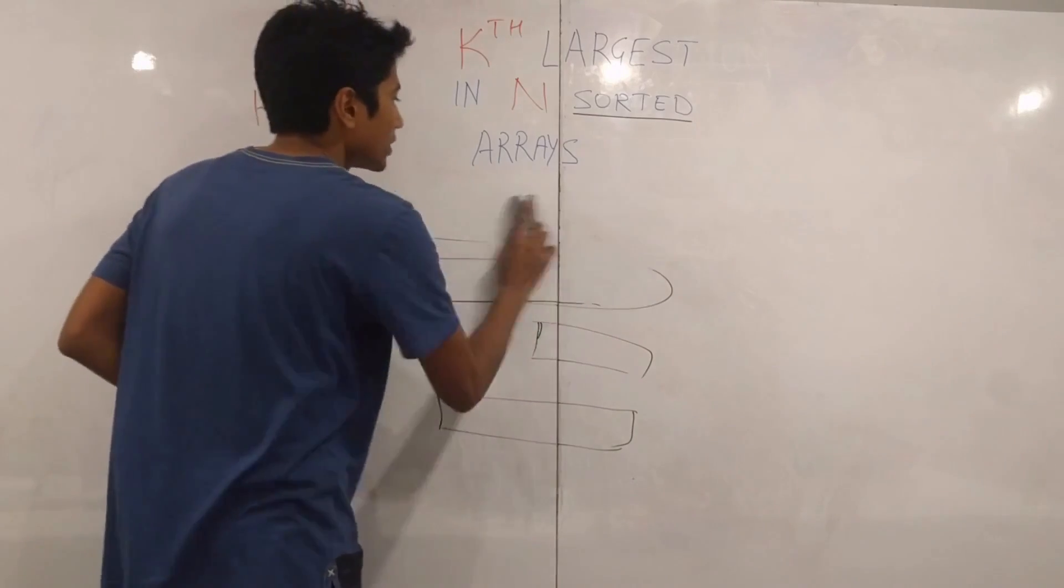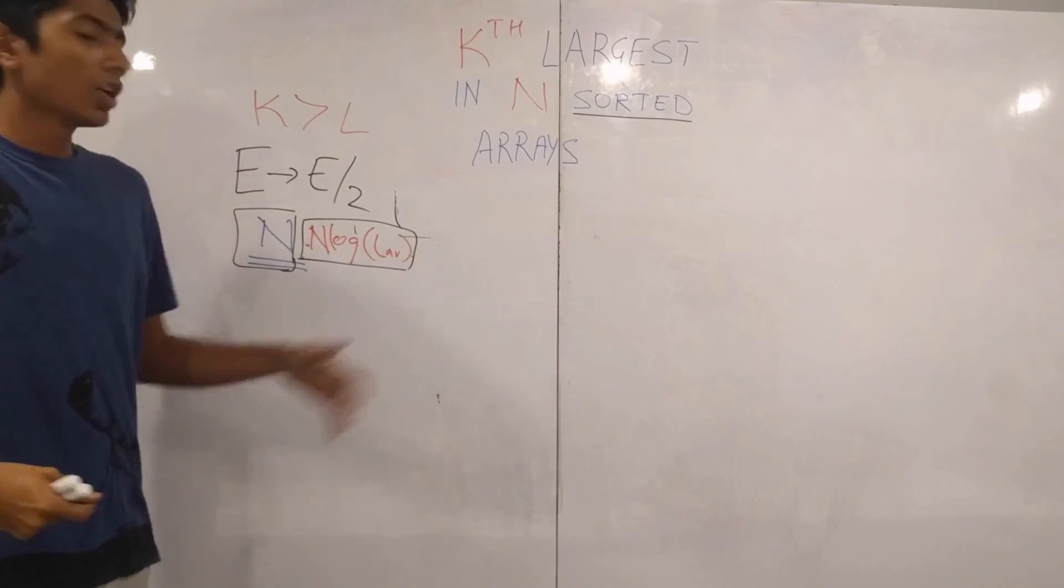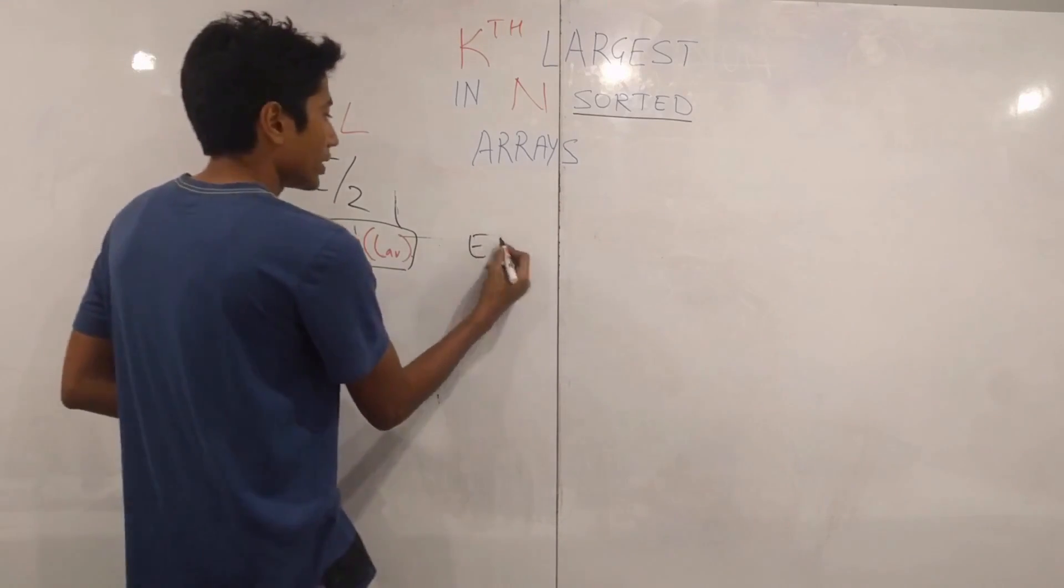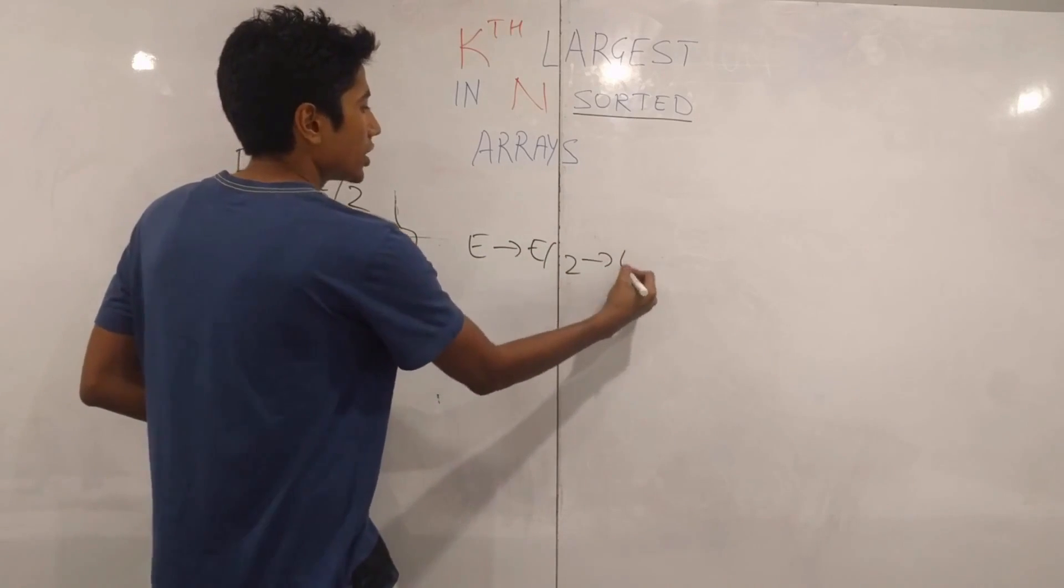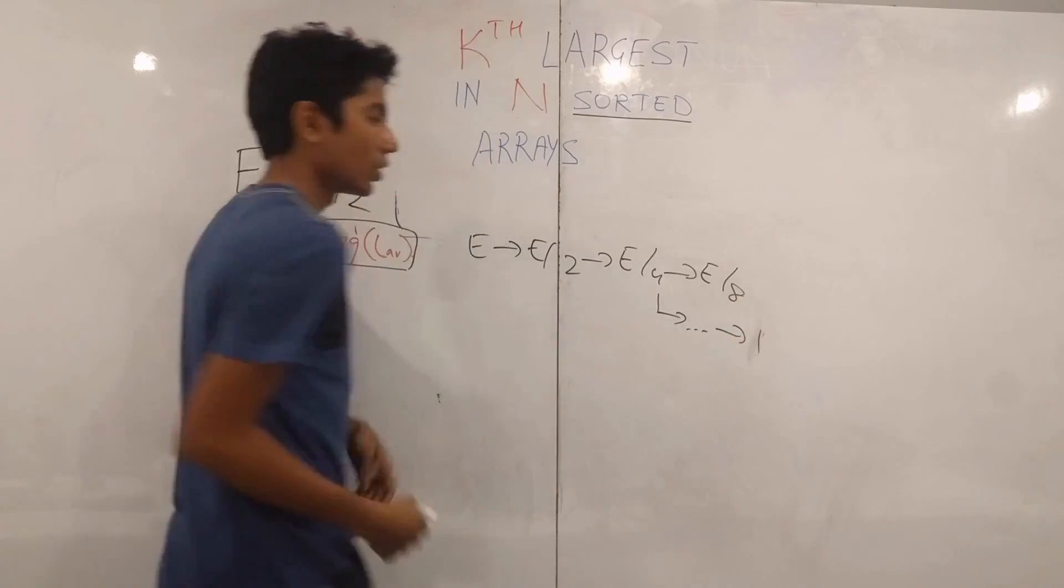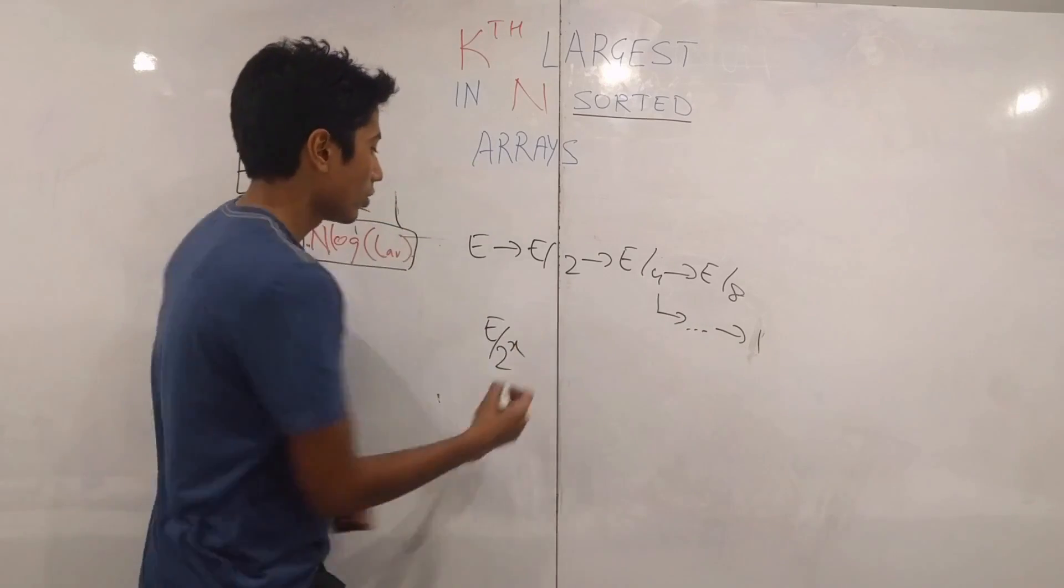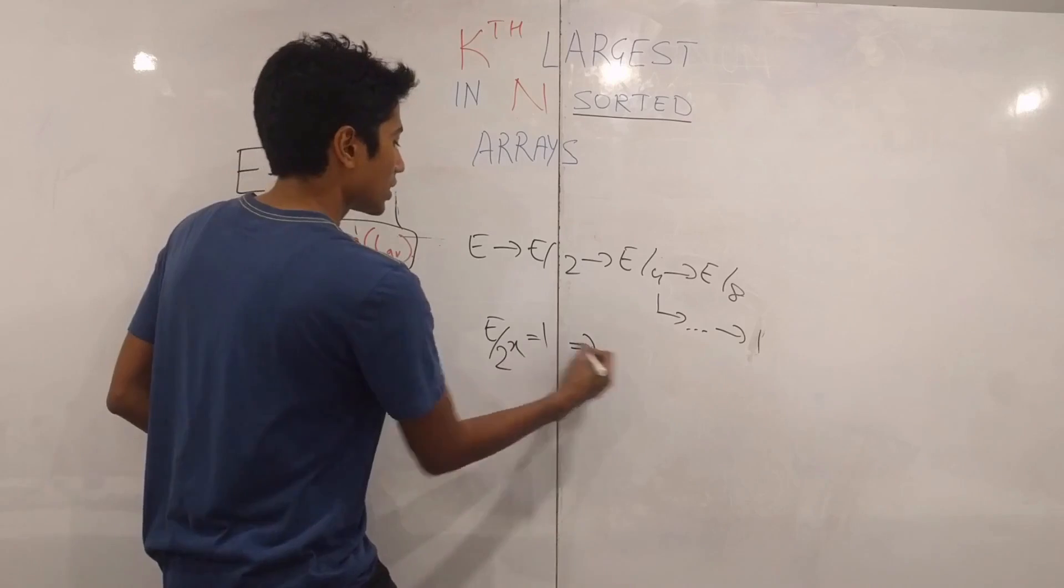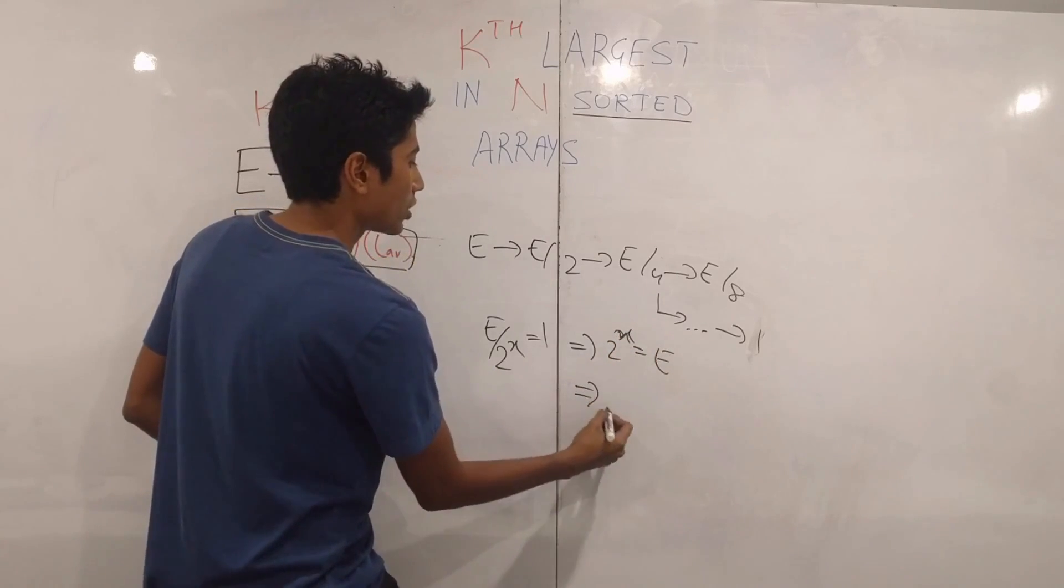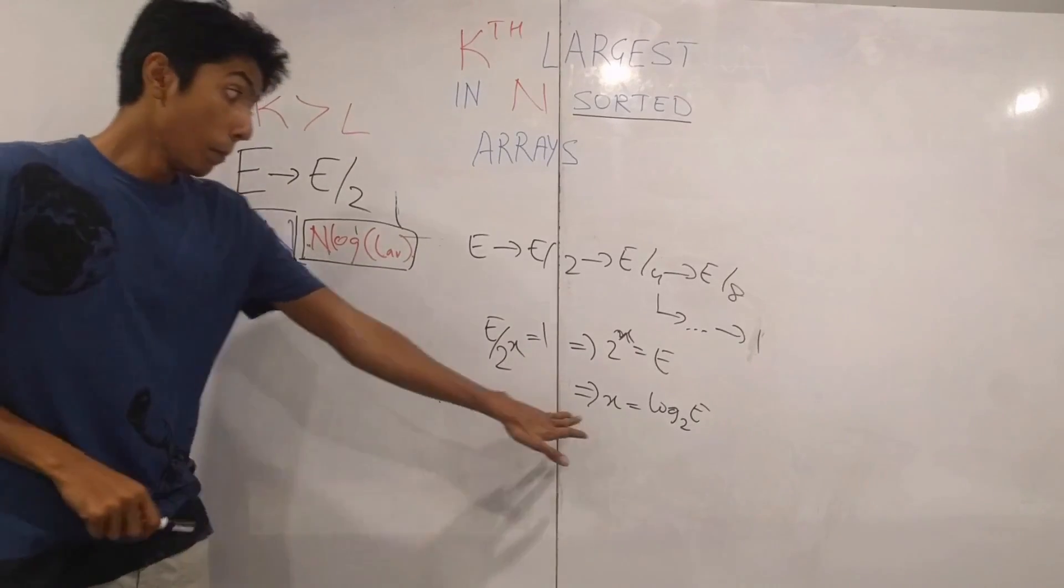Now this is a very common pattern. If you have e elements and you just have one element, then you immediately give the answer. So what we are going to be doing is divide e by two up to the point that it becomes one. So it's e changes to e by two, changes to e by four, changes to e by eight, all the way to just one. So what that means is that e by two to the power x, there exists some number for which this becomes one, which tells us two to the power x is equal to e, which in turn tells us that x is equal to log e to the base two. x is equal to log e to the base two.